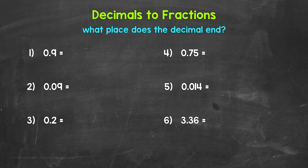Let's start with converting decimals to fractions and jump into our examples here, starting with number one, where we have 0.9, nine tenths. When we convert a decimal to a fraction, we need to take a look at the place the decimal ends. So does it end in the tenths, hundredths, thousandths, ten thousandths, or whatever the case may be? We use that place to determine the denominator of the fraction.